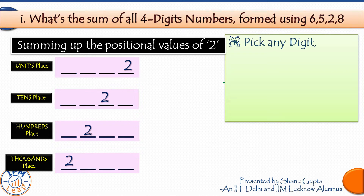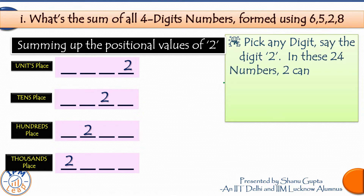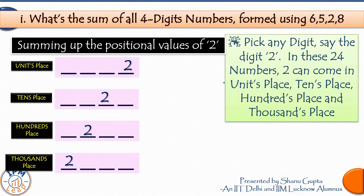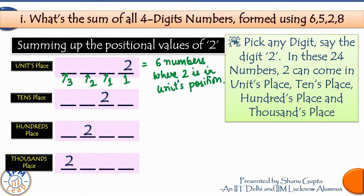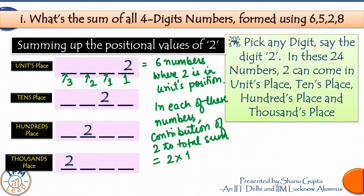In these 24 numbers, digit 2 can come in the units place, tens place, hundreds place, or thousands place. If we fix 2 in the units place, the remaining 3 places can be filled with the remaining 3 digits in 3! = 6 ways. So there are 6 numbers where 2 comes in the units place. In each of these numbers, the contribution of digit 2 is 2 × 1. Therefore, the total contribution of 2 in these 6 numbers is 6 × 2 × 1.